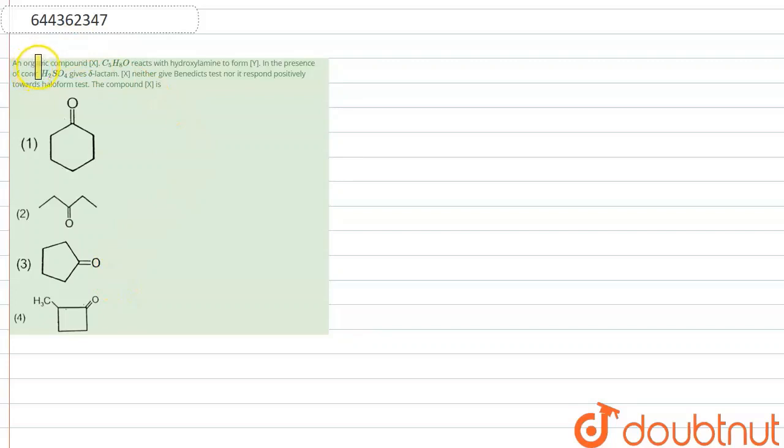The question is that an organic compound X, C5H8O, reacts with hydroxylamine to form a compound Y. In the presence of concentrated H2SO4, it gives delta lactam. X neither gives Benedict test nor it responds positively towards haloform test. From this, we have to find out what is compound X.